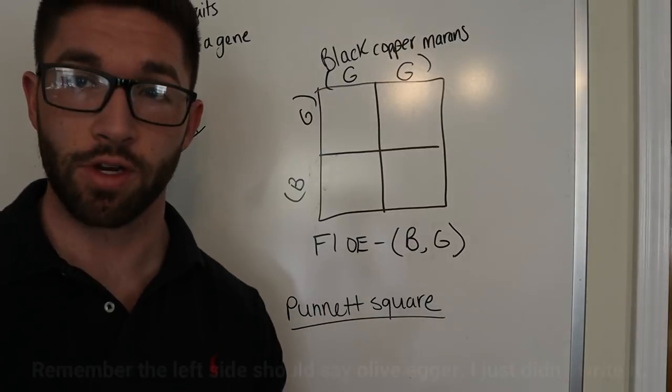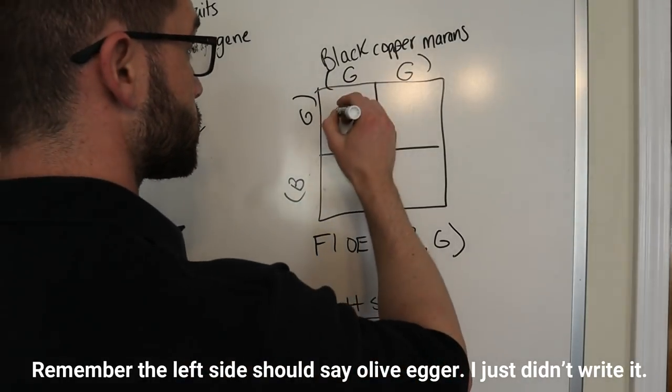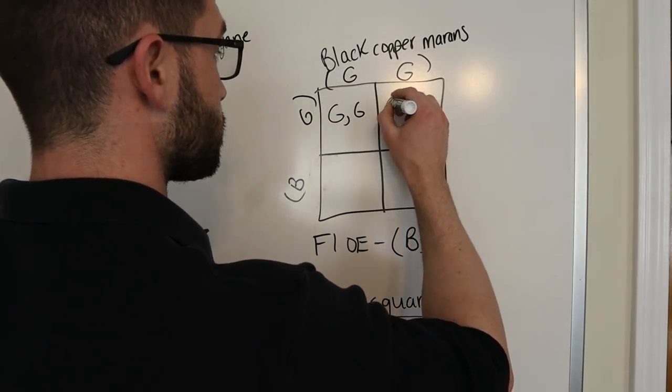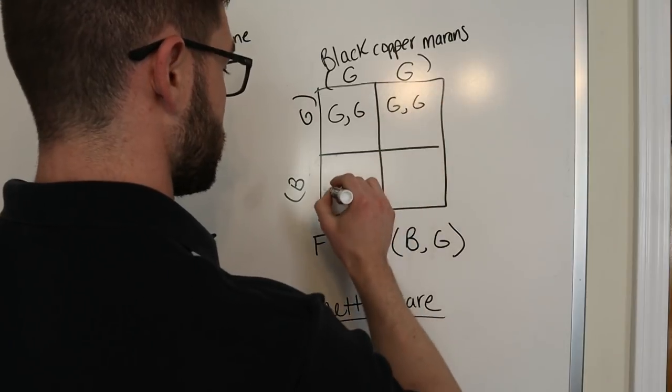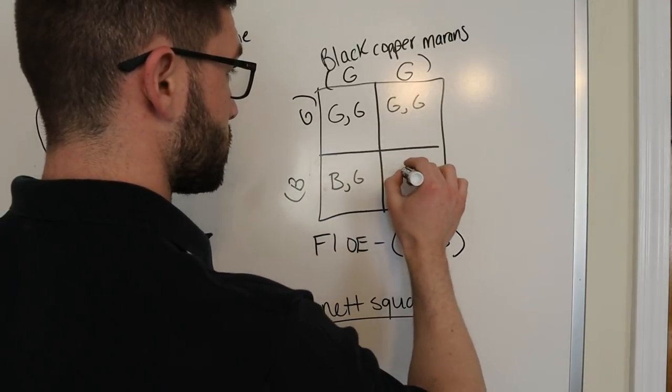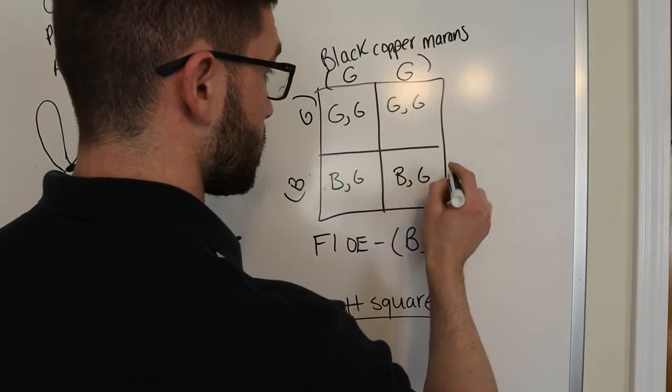So, now when we're crossing these for a second generation olive egger, these two inherit two G's. Two G's. One B, one G. One B, one G.